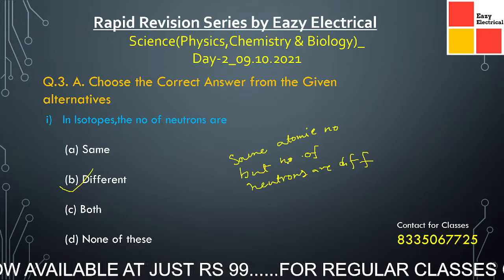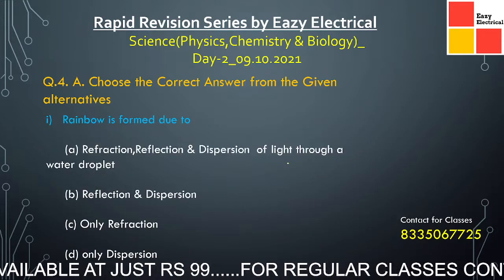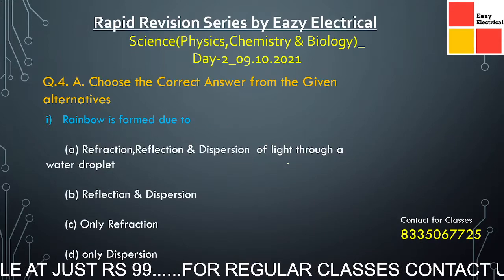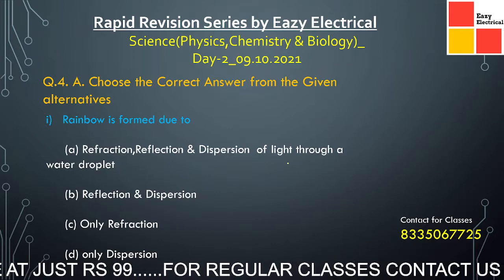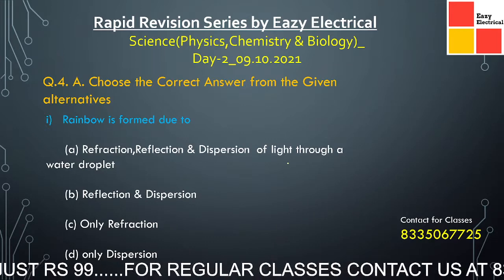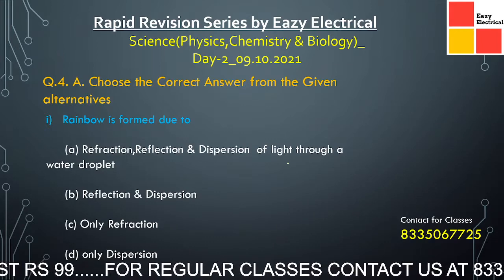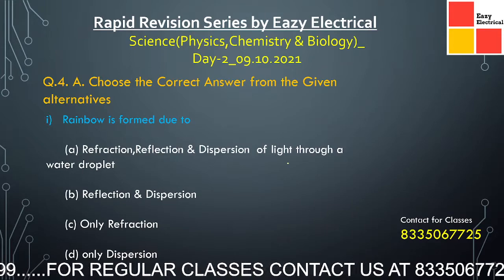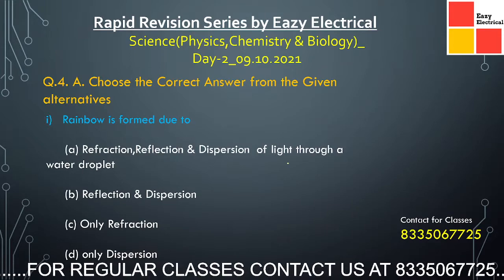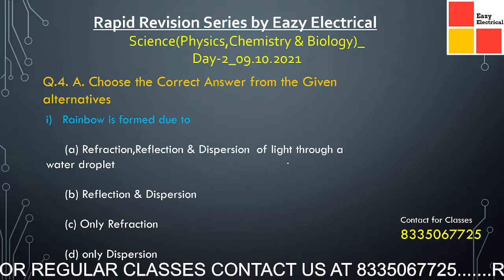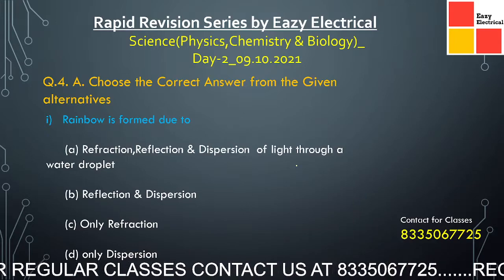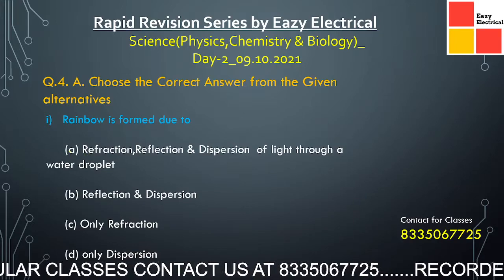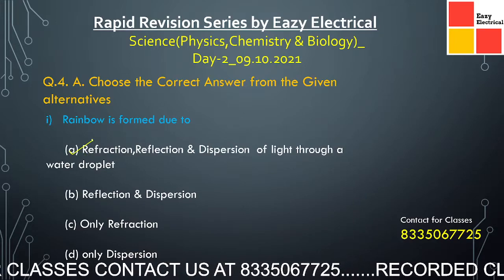Next question: a rainbow is formed due to — option A: refraction, reflection, and dispersion of light through a water droplet; option B: reflection and dispersion; option C: only refraction; option D: only dispersion. The correct option is option A. It is a very confusing question.